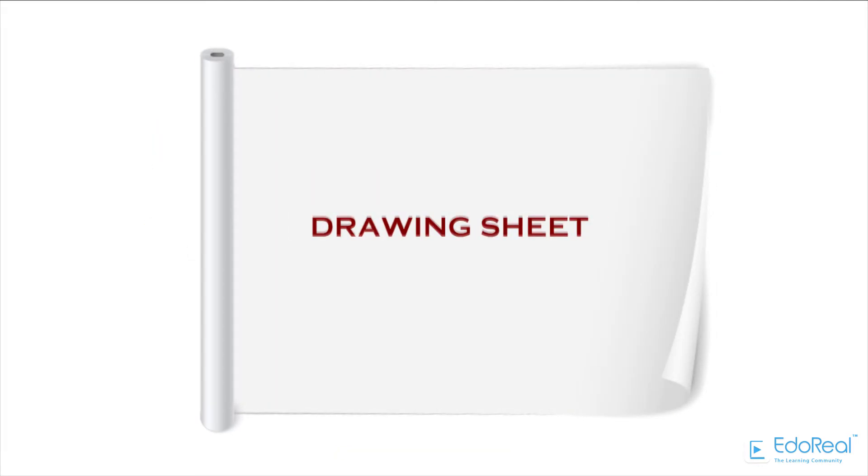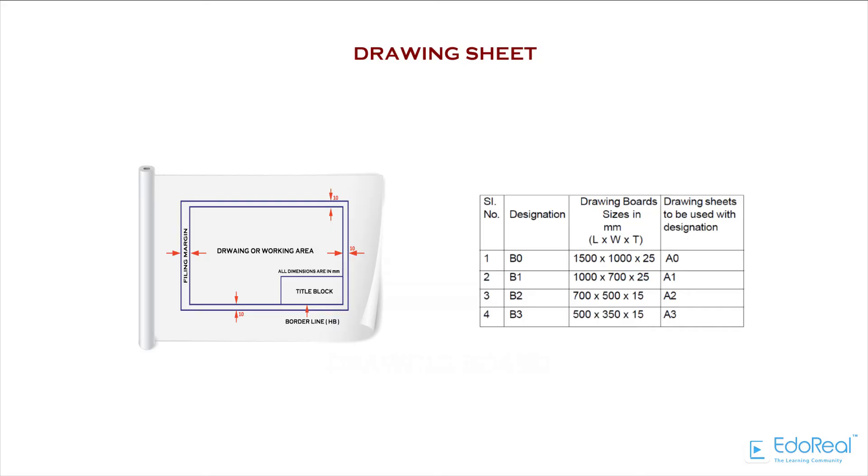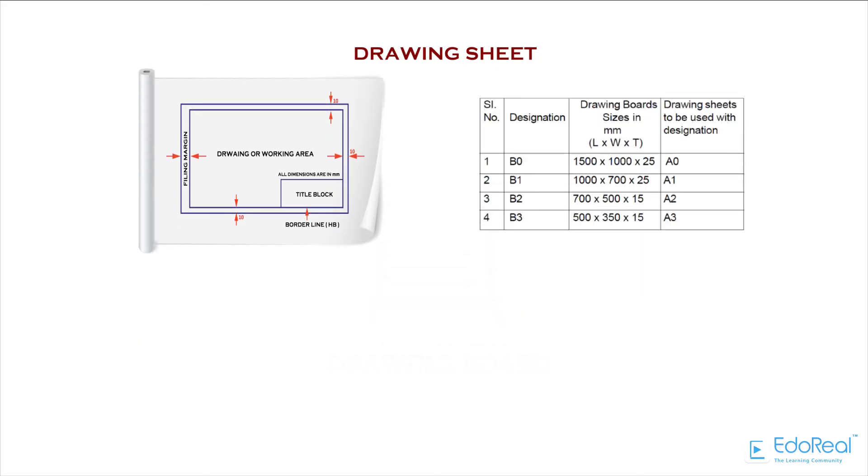Drawing sheet is a white paper on which an object is drawn, which is available in various sizes. To fix the drawing sheet to the board, clamps, plasters, and paper holders are used.